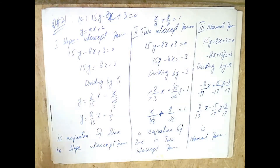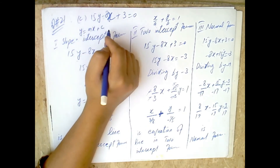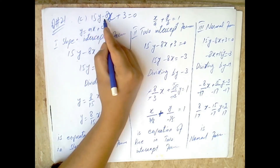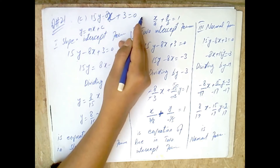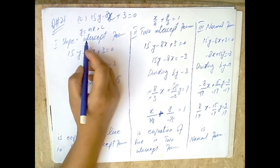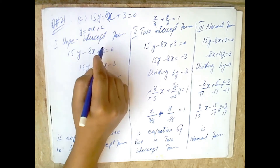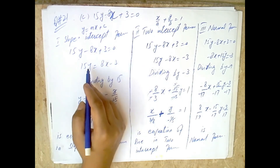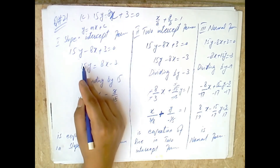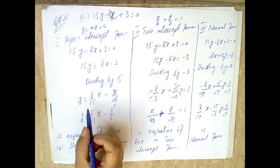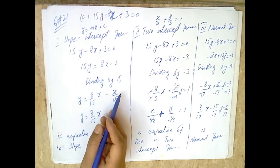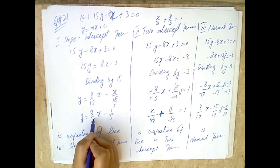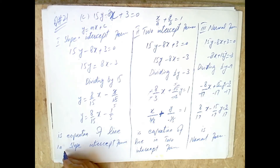Now for part (c), the third equation is 15y minus 8x + 3 = 0. First, we find the slope-intercept form. Keeping y on one side, we divide both sides by 15. After division, y = (8/15)x minus 3/15, which simplifies to y = (8/15)x minus 1/5. This is the equation of the line in slope-intercept form.